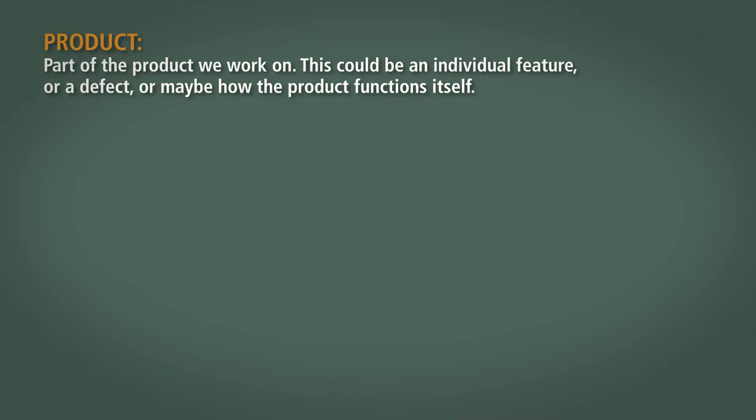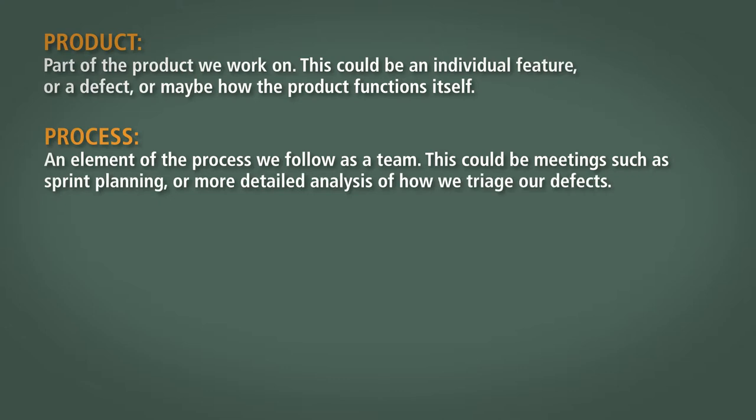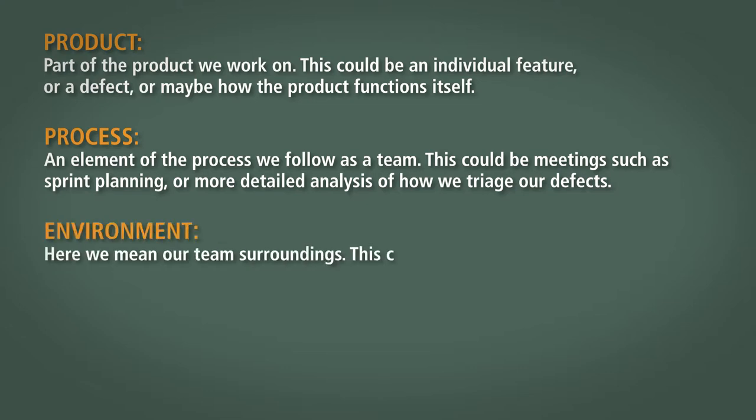Here, we suggest four subjects for the team to choose from. Product: Part of the product we could work on. This could be an individual feature or maybe a defect or even how the product functions itself. Process: An element of our process that we follow as a team. This could be meetings such as sprint planning or a more detailed analysis of how we triage our defects, for example. Environment: Here we mean the team's surroundings. This could be the tools that we use to help us, the equipment that we have on our desks, or even the brand of coffee that we drink as a team.